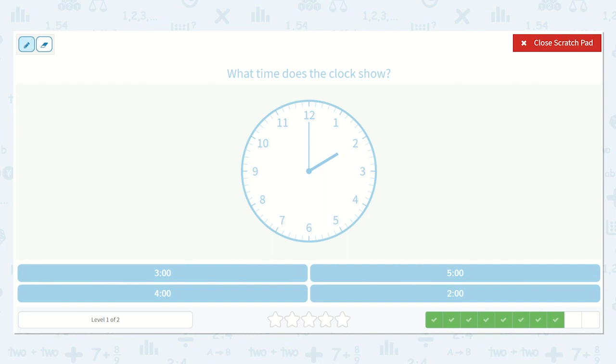Here, what hour is the hour hand pointing to? Yep, 2. What about the minute? Yes. It's pointing to the 12, so we know that's o'clock. So it's 2 o'clock. Brilliant job. Do you see this time down below? Yeah. Right there.